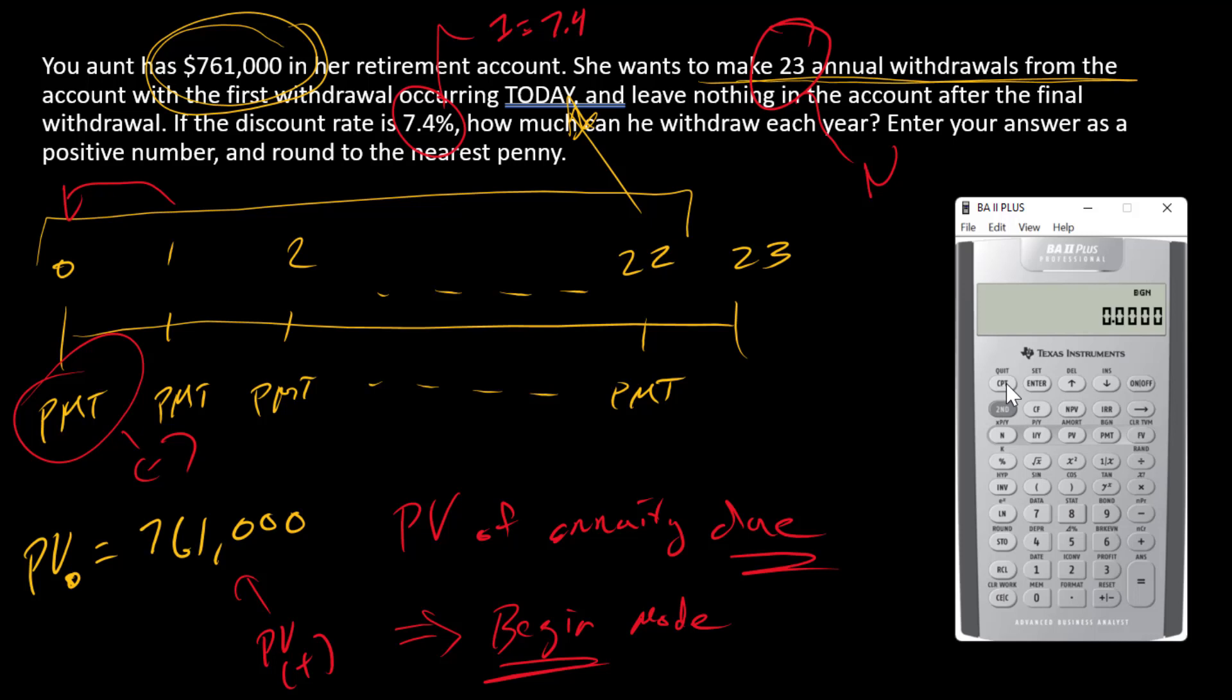So now that I'm in begin mode, all I got to do is compute the payment. Compute the payment, and there I have it. So there is the answer. The answer is $65,022.05.